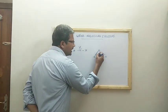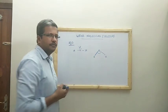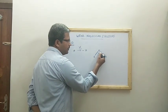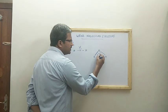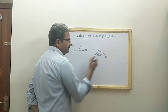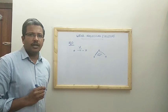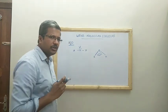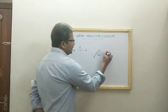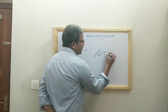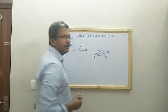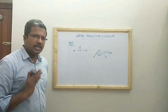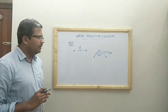In the V-shaped water molecule, there is a bond angle between the two oxygen-hydrogen bonds equal to 104.5 degrees. The bond length between oxygen and hydrogen is 95.84 picometers.